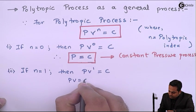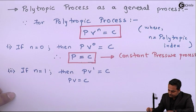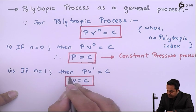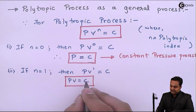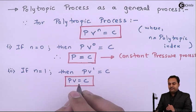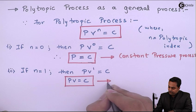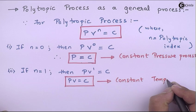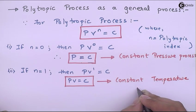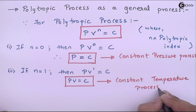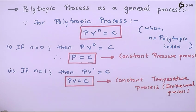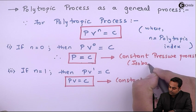Next, if n is equal to 1, then PV raised to 1 is equal to constant, which means PV equals C. If PV is equal to constant, this is the governing equation for a constant temperature process, also called the isothermal process. The previous case, constant pressure, is also called the isobaric process.